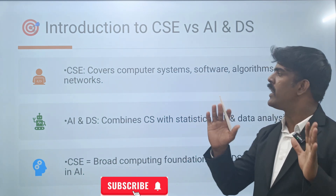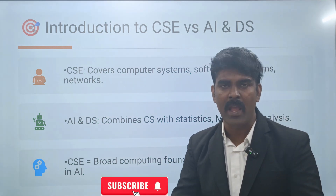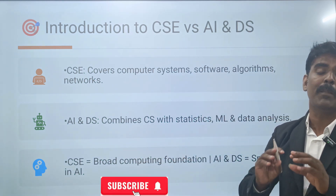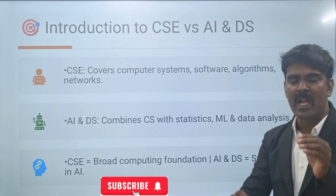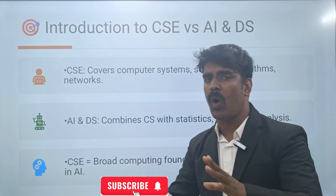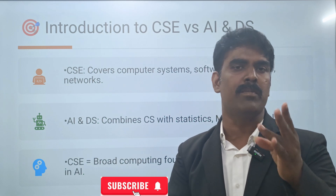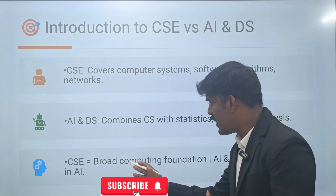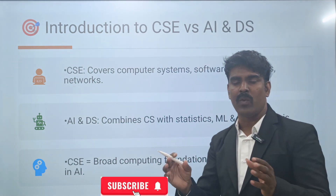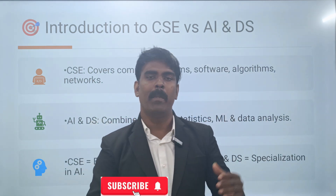CSE covers all the computer systems, all the software, algorithms, and networks. And AADS — Artificial Intelligence and Data Science — combines computer science with statistics. AADS focuses on artificial intelligence, data analysis, and data analytics. Statistics and probability play a vital role in AADS. CSE provides a broad computing foundation covering overall computer science.